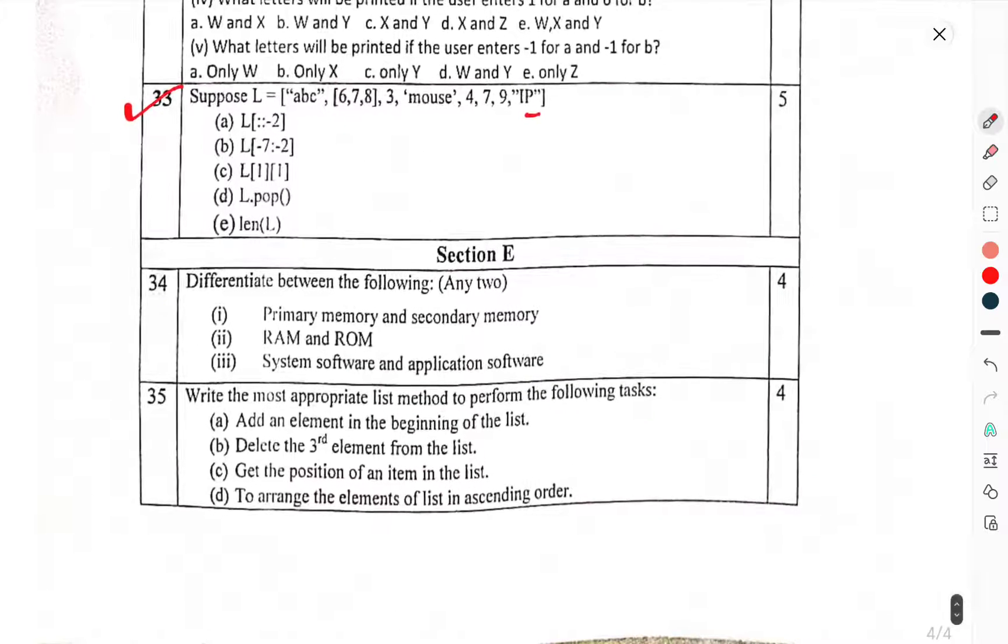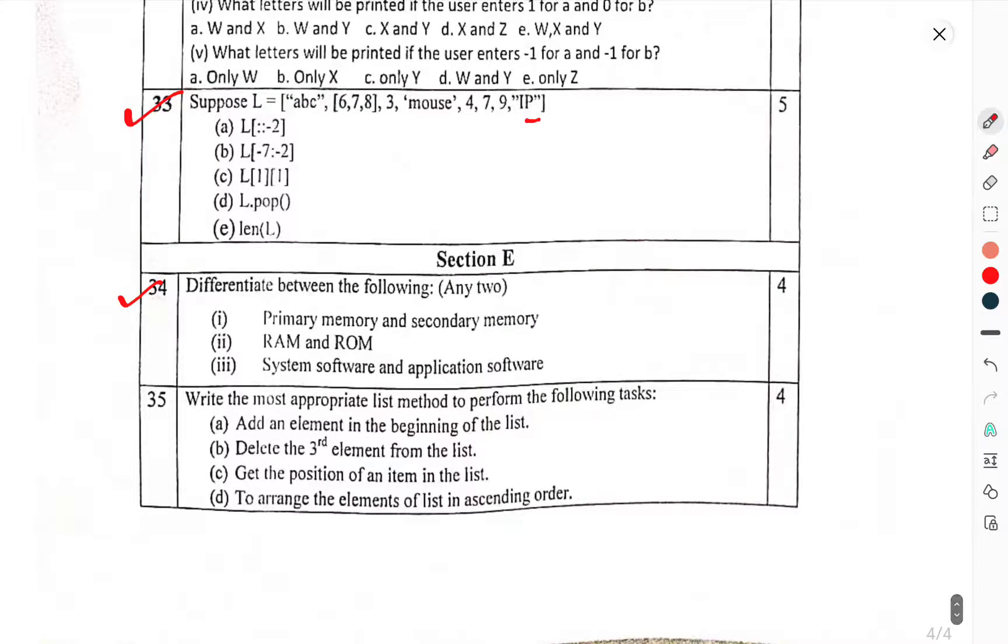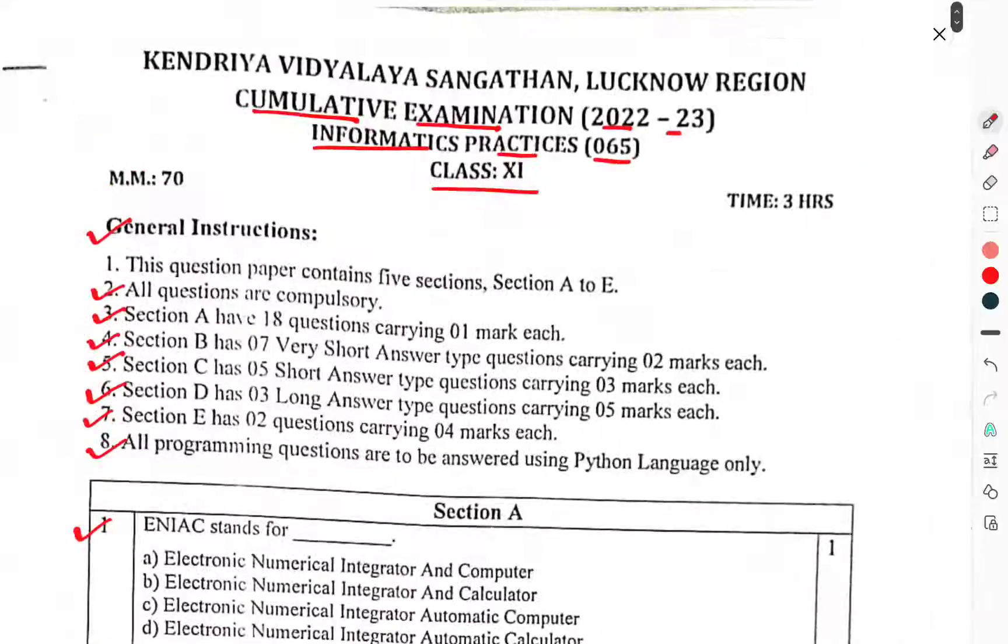Section E. Question 34: Differentiate between the following - primary memory and secondary memory, RAM and ROM, system software and application software. Question 35: Write the most appropriate list method to perform the following tasks - add an element at the beginning of the list, delete the third element from the list, get the position of an item in the list, to arrange the elements of a list in ascending order.